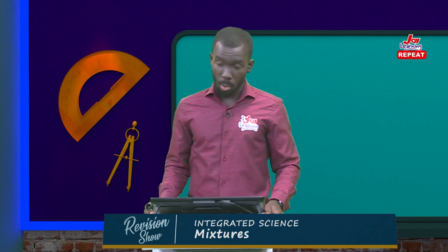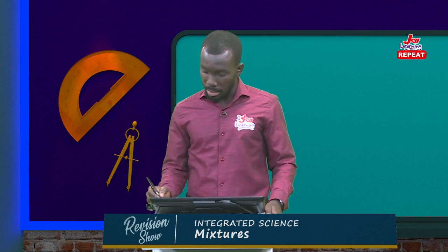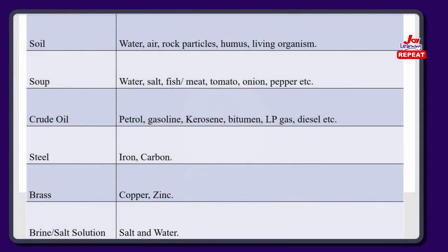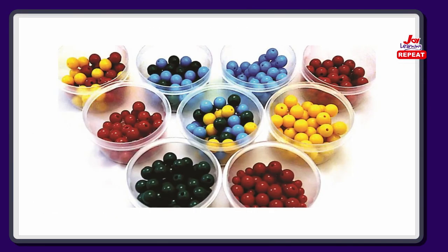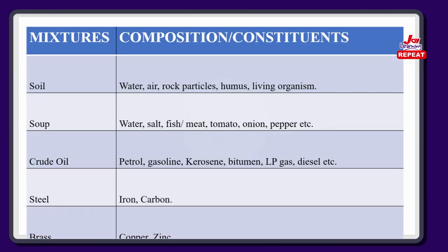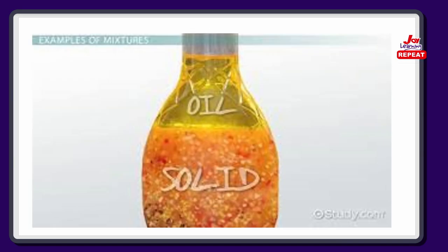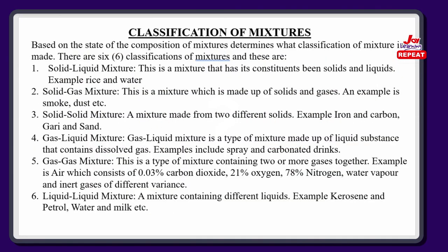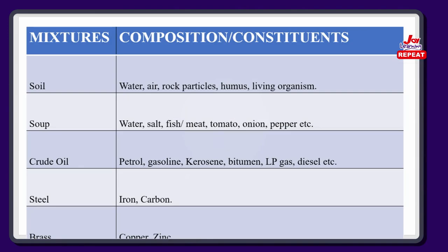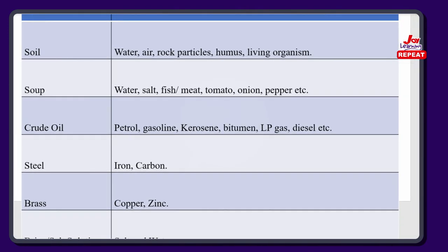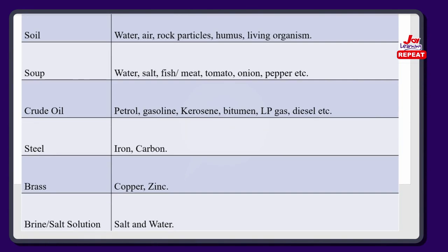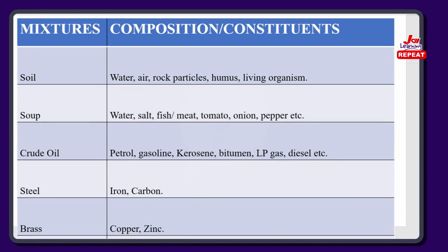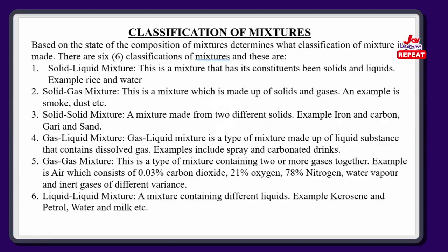Then we have steel, an alloy made up from iron and carbon, and we also have brass made from copper and zinc — another alloy. Our last example is brine, or what is commonly termed as salt solution. The name speaks for itself: because it's a salt solution, the compositions are water and salt itself.